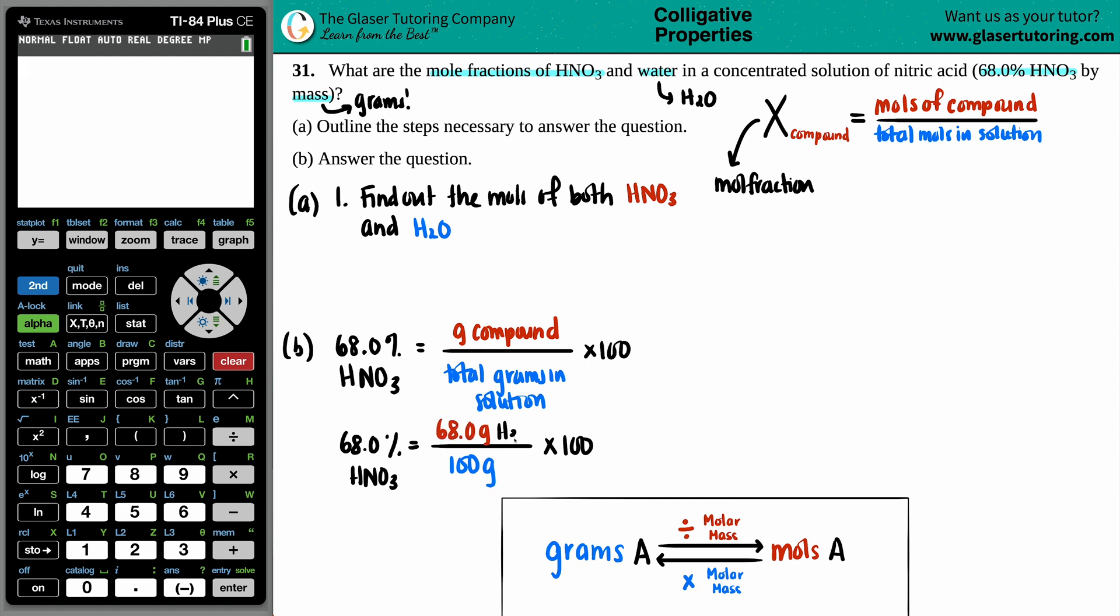And if they're specifically saying that this is of HNO3, that gram of the specific compound is HNO3. So right off the bat, we know that we have 68.0 grams of HNO3.